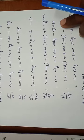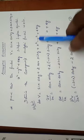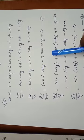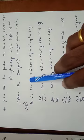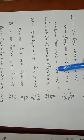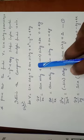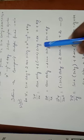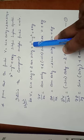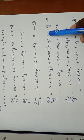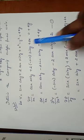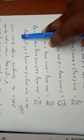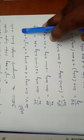Similarly, the same function can be differentiated partially with respect to y. So ∂v/∂y: sin x is fixed, differentiation of cosh y is sinh y; plus 2 cos x is fixed, differentiation of sinh y is cosh y. Differentiation of x square is 0, differentiation of minus y square is minus 2y, and differentiation of 4xy with respect to y is 4x.